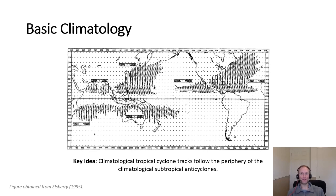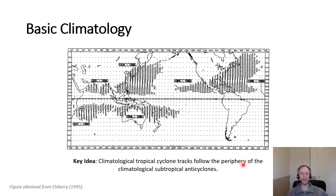Let's dig into a little bit about the basic climatology of where tropical cyclones move. We've taken a look at this image before. The key idea is that climatological tropical cyclone tracks — not the track of one individual cyclone, but on the whole for a larger set of tropical cyclones — follow the periphery of the climatological subtropical highs, the subtropical anticyclones.